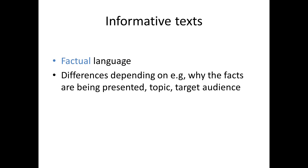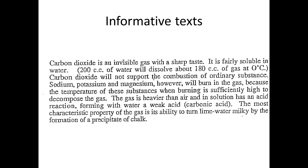For example, a textbook for primary school children is going to need to use a different vocabulary and probably simpler sentence structures than a scientific paper, even if the topic is essentially the same. Compare the following texts. They're both about chemistry, but one is from a textbook, whereas the other is aimed at chemists — that is, people already very familiar with the subject.